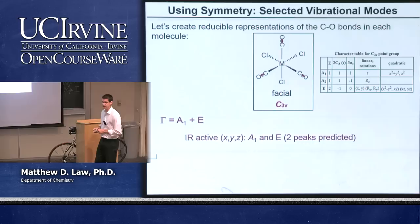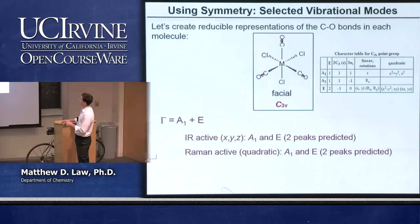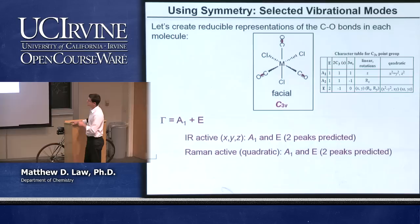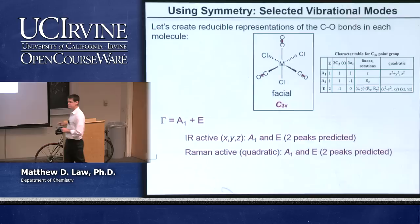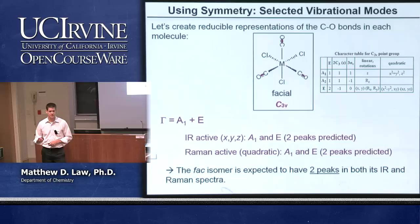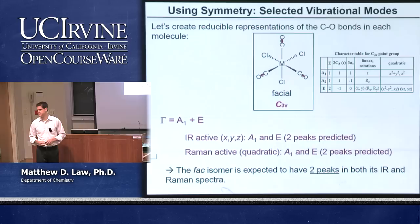We then look at Raman activity, which is predicted when we have the irreducible representation that transforms as the quadratics — the binary products of X, Y, and Z. A1 has Z-squared symmetry, and E has X, Y, and various binary product symmetries. So both modes are also Raman active. Our prediction is that the facial isomer has two infrared and two Raman vibrational transitions in the spectrum.